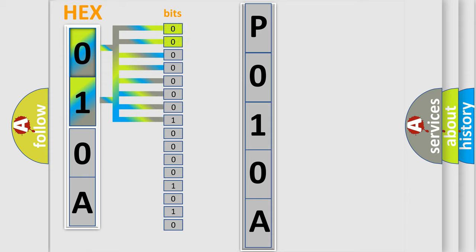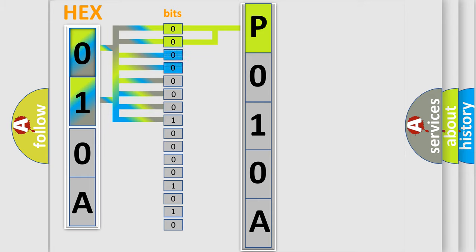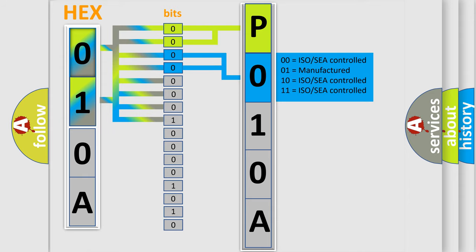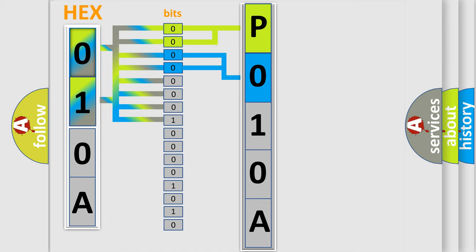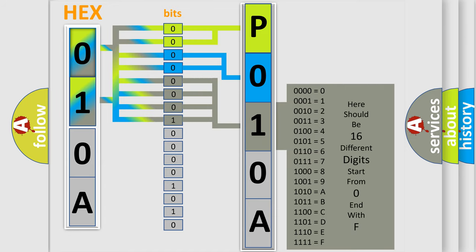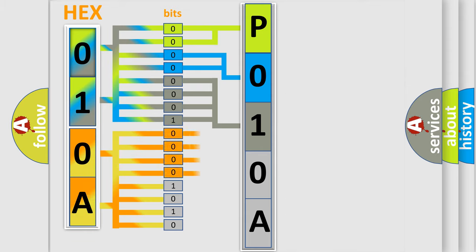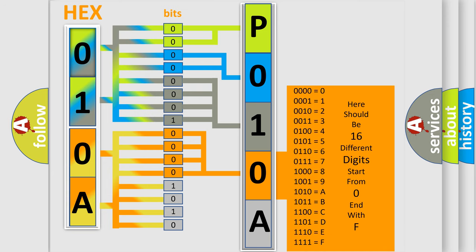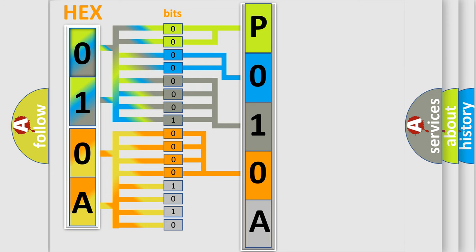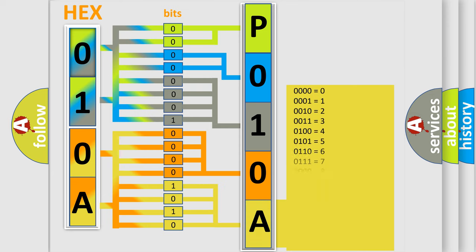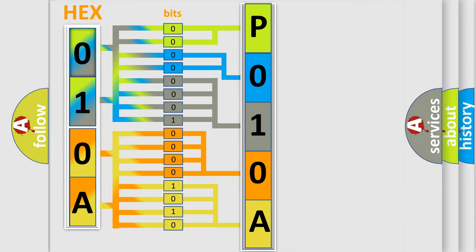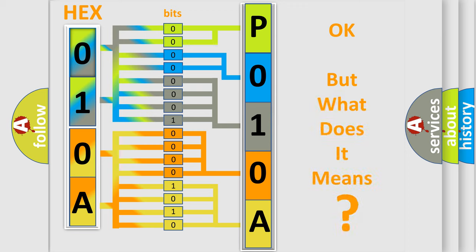By combining the first two bits, the basic character of the error code is expressed. The next two bits again determine the second character. The last four bits of the first byte define the third character of the code. The second byte is composed of a combination of eight bits: the first four bits determine the fourth character, and the combination of the last four bits defines the fifth character. A single byte conceals 256 possible combinations. We now know in what way the diagnostic tool translates the received information into a more comprehensible format. The number itself does not make sense to us if we cannot assign information about what it actually expresses.